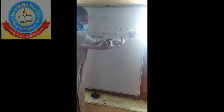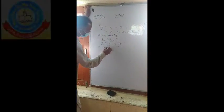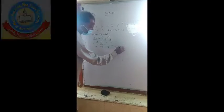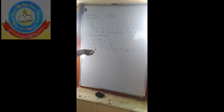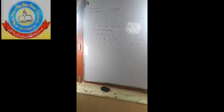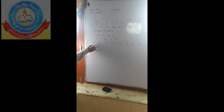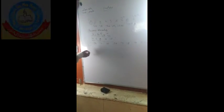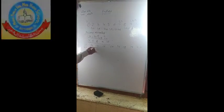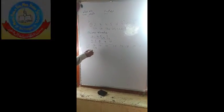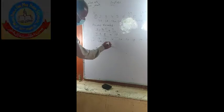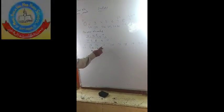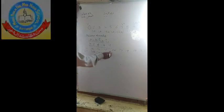Going from 10 up to 20: eleven is also a prime number because it has only two factors, one and eleven. Thirteen is also a prime number with only two factors, one and thirteen. Fourteen has more than two factors — one, two, seven, and fourteen — so it is a composite number. Fifteen and sixteen are also composite numbers.